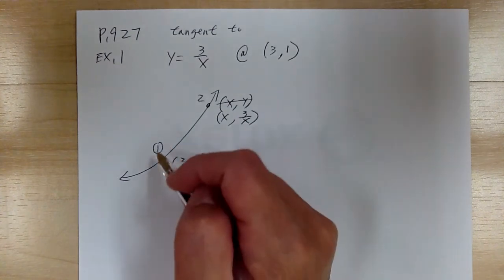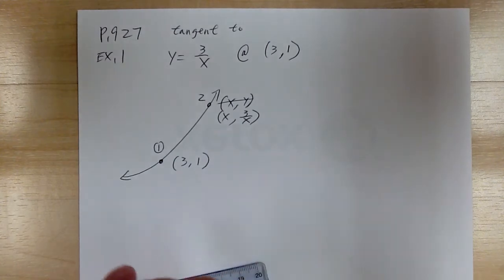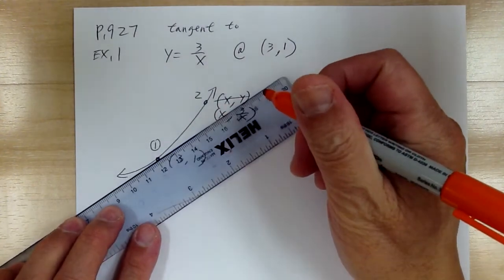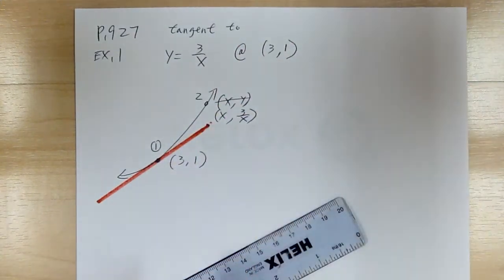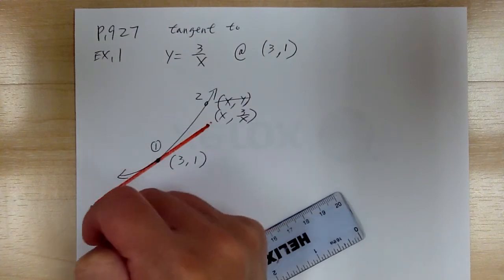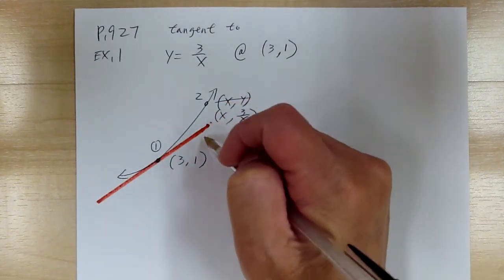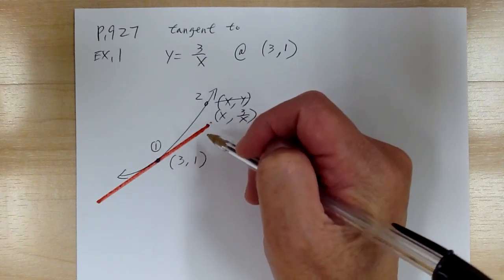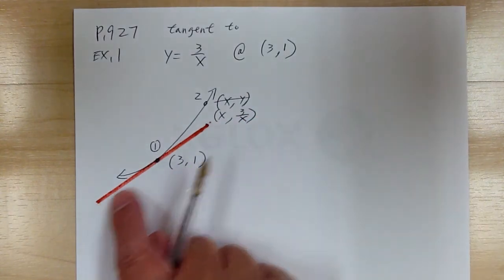You're looking for this tangent line and its equation. When looking for the equation of a line, you need a slope and a point. Right now you have a point, so you need to find the slope.